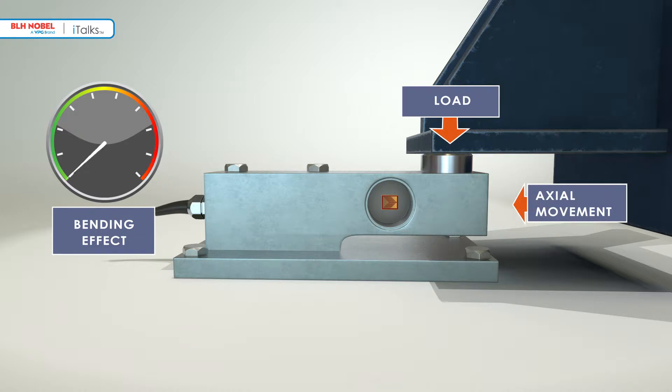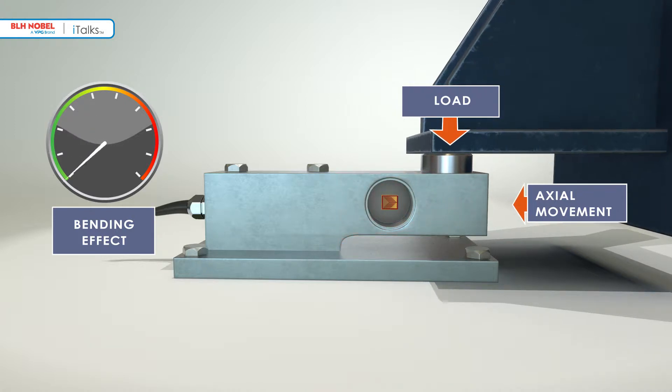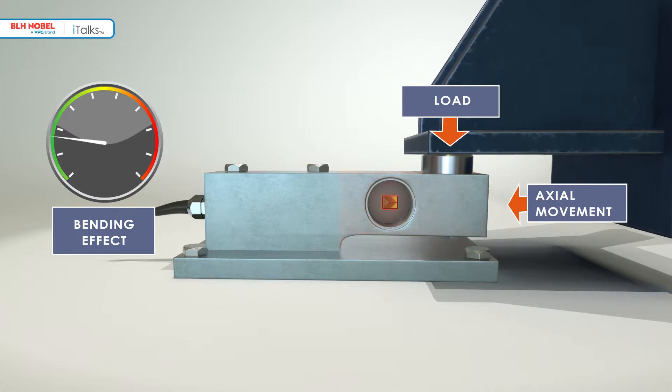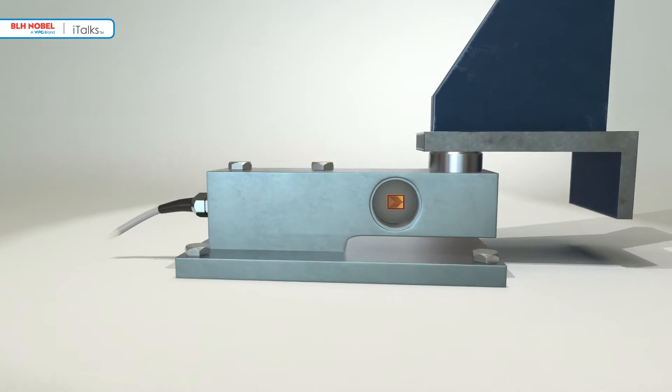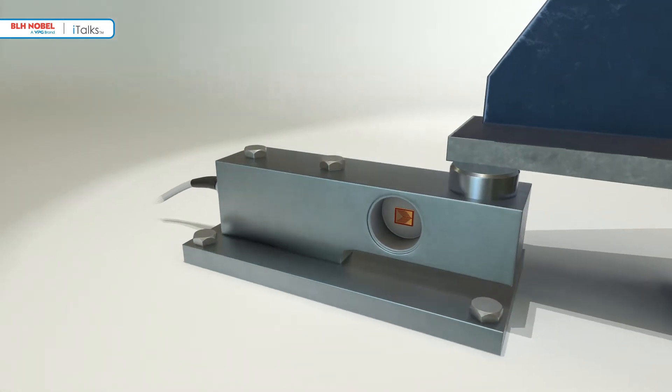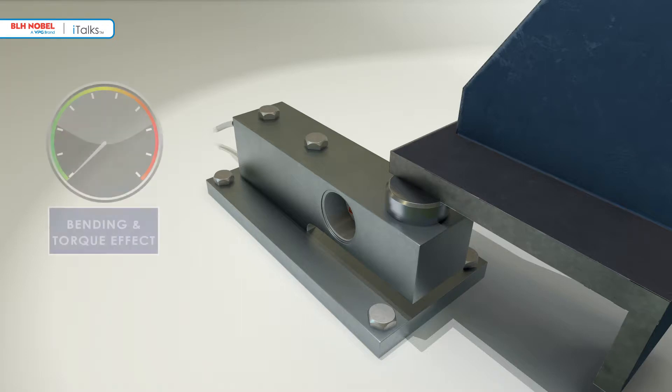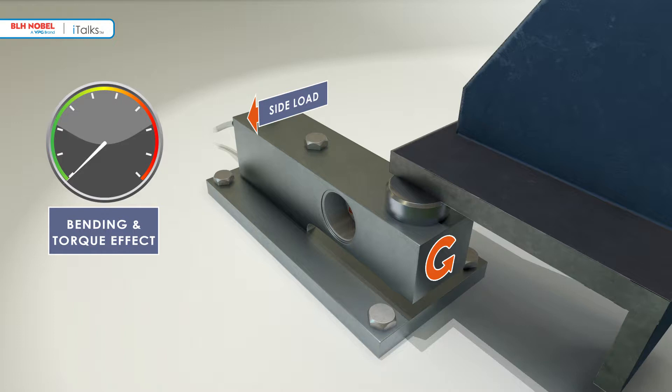In a real process weighing application, however, the bending effects can change unpredictably due to thermal or structural movement. These additional strains result in measurement errors. The side loads can be in any direction, caused by agitation, wind loads, or the flexing of structural supports and piping connections. In addition to bending errors, the load cell is now subject to twisting forces, which result in additional torque errors.